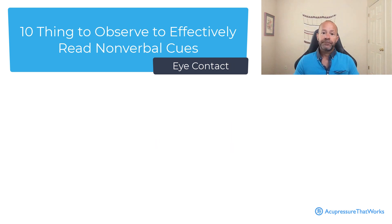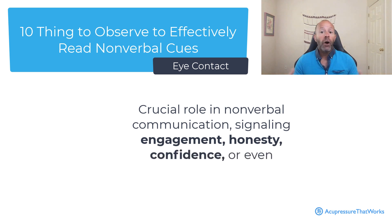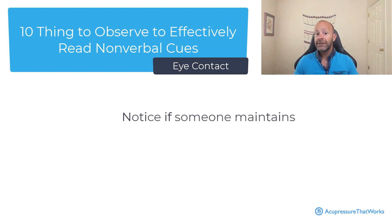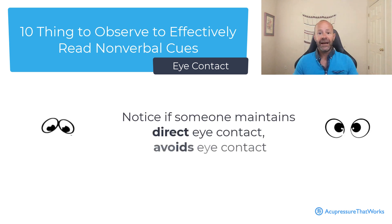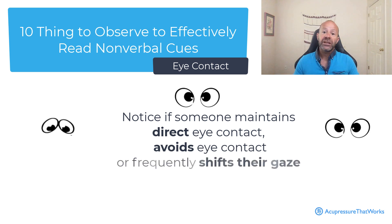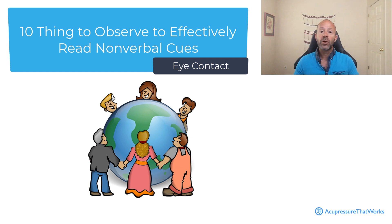Eye contact plays a crucial role in nonverbal communication. It can signal engagement, honesty, confidence, or even deception. Notice if someone maintains direct eye contact, avoids eye contact, or frequently shifts their gaze. Be aware that eye contact norms differ across cultures, so it is essential to consider cultural context when interpreting these cues.